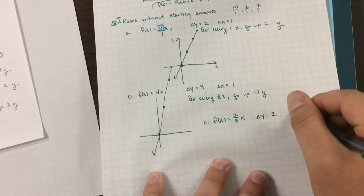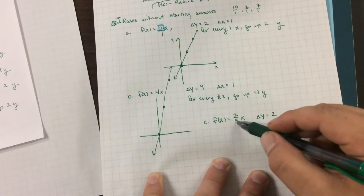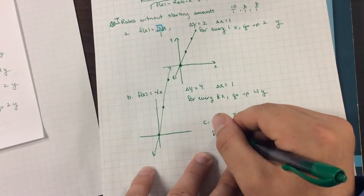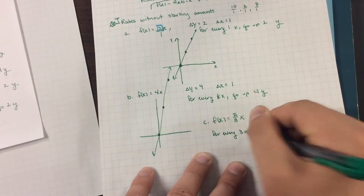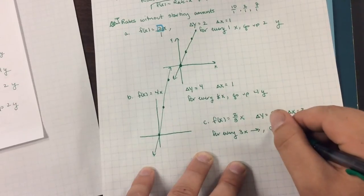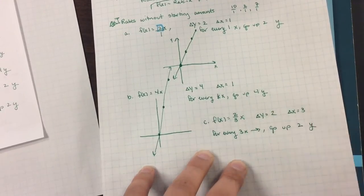Our change in y is on top here. So the change in y is 2. And our change in x here on the bottom is 3. So that means for every 3x to the right, go up 2y.